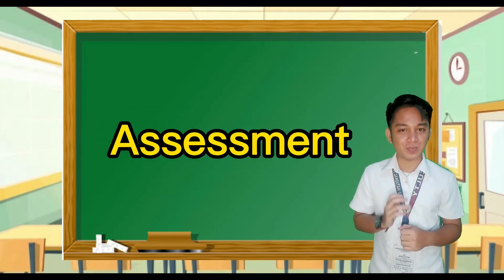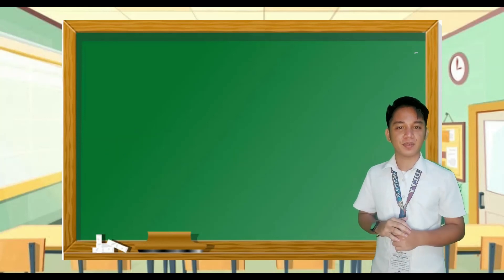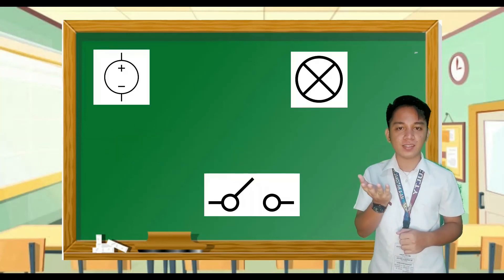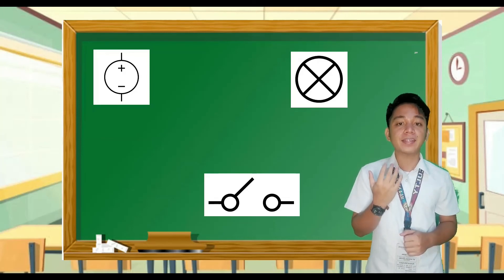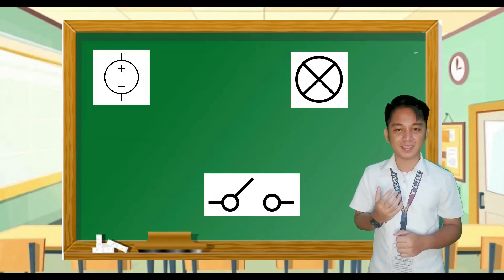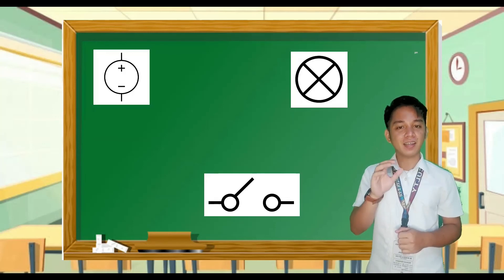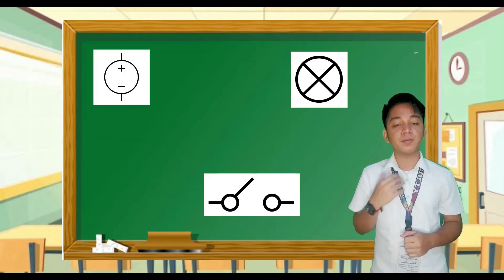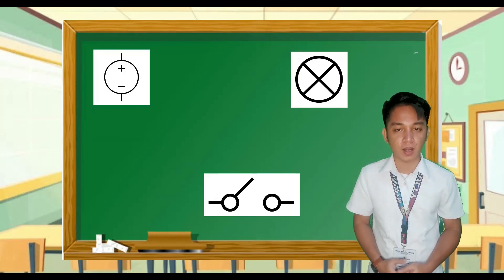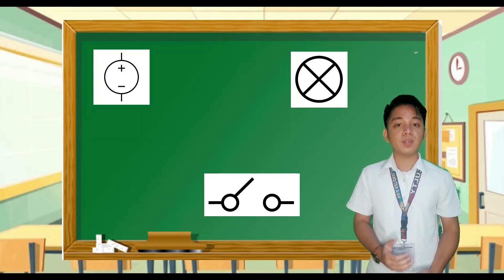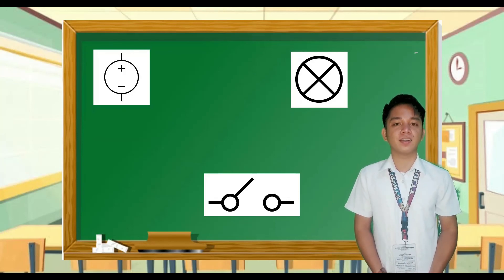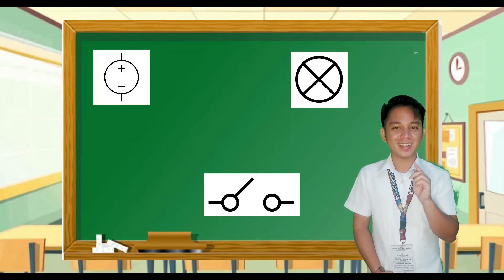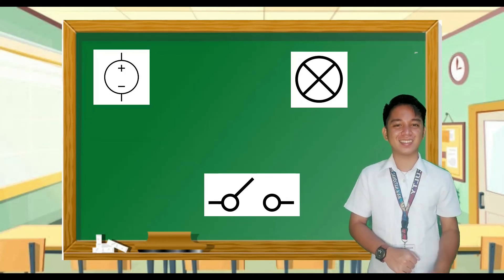Now let's have an assessment or a short activity. Using these images, I want you to create pictorial and schematic diagrams. You must choose the right examples so your diagram would work. The link of the assessment as well as the grading criteria is posted in our chat box. You will answer using our learning management system portal. You are given 10 minutes to answer the activity.